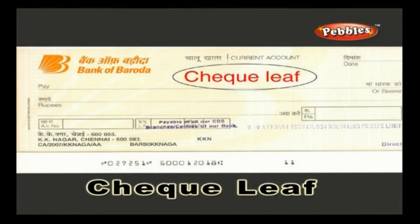Check Leaf. A check leaf represents a single check in the checkbook. The check details are written, dated, and signed by the check holder. This can be given instead of money based on the rules.